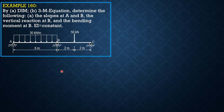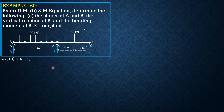Let's apply the reactions and extend the loading and call it X. So we have RA, RB, and R sub C. Taking summation of moments about C equals 0: RA times 10 plus R sub B times 4 equals 30 times 6 times 7 plus 50 times 2. Solving for R sub B in terms of R sub A: R sub B equals negative 2.5 RA plus 340.